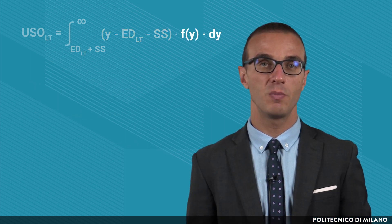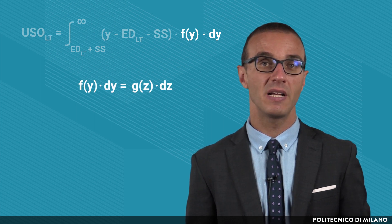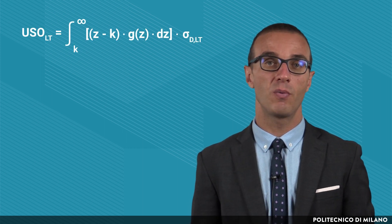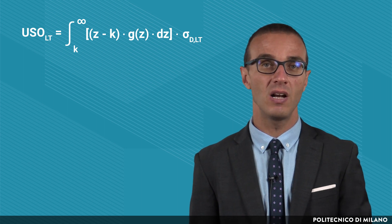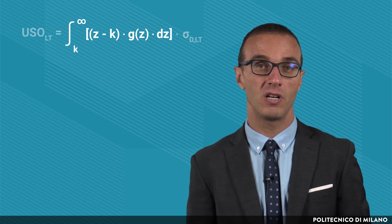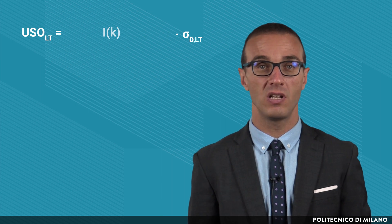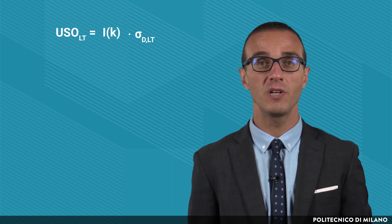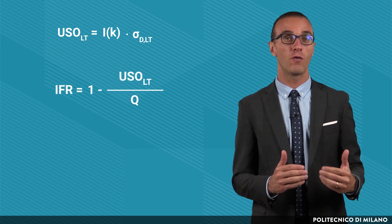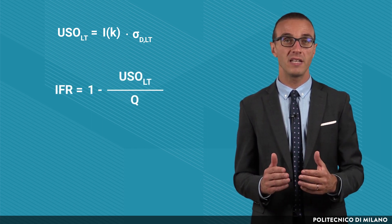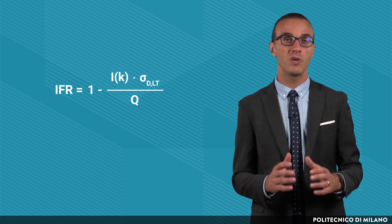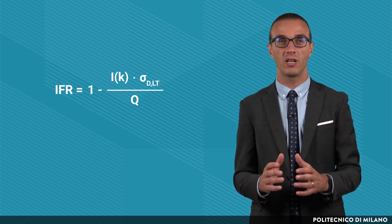The third term to be standardized is the f-function depending on Y, which becomes a new g-function depending on the new variable Z. Putting all three standardized terms together, the new integral in Z is the one shown in the picture. If we define the I(K) value as shown in the picture, the new expression of the annual units in stockout can be derived as a product between I(K) and the standard deviation of the demand during the lead time. Using the fill rate formula previously illustrated and replacing the units in stockout during the lead time with this expression, the link between the fill rate and I(K) is identified as shown in the picture.